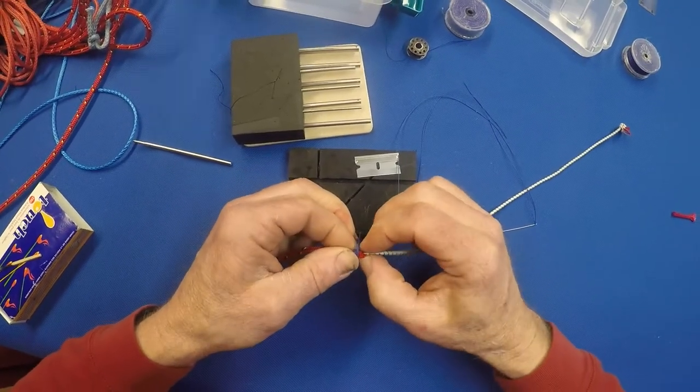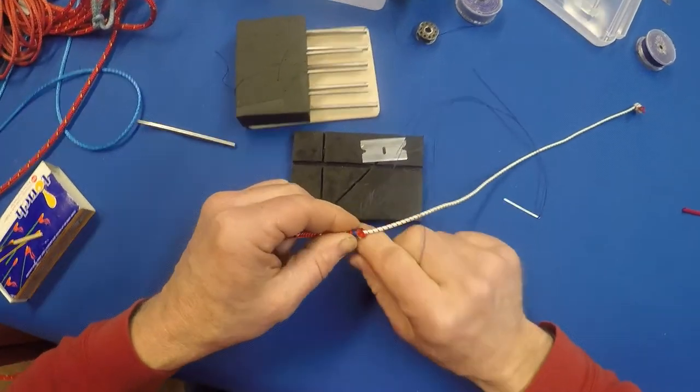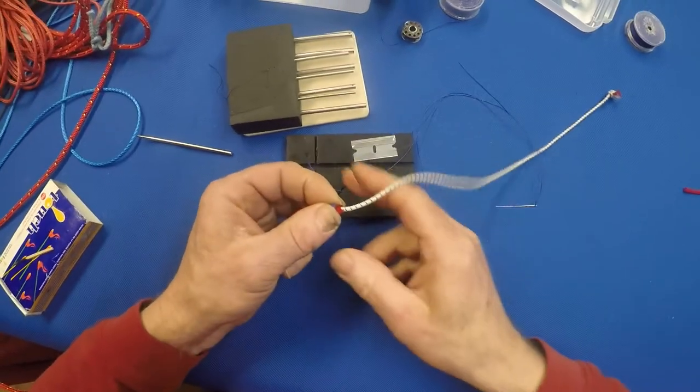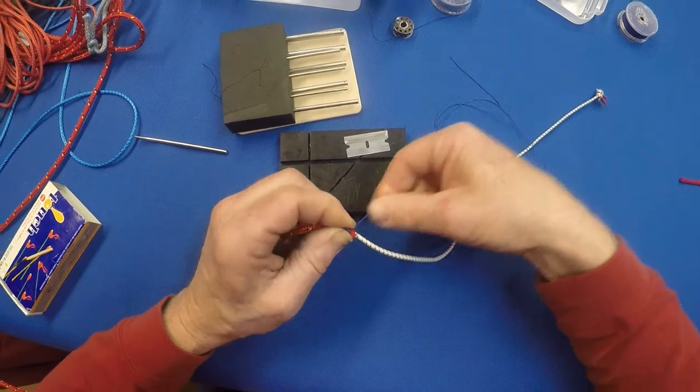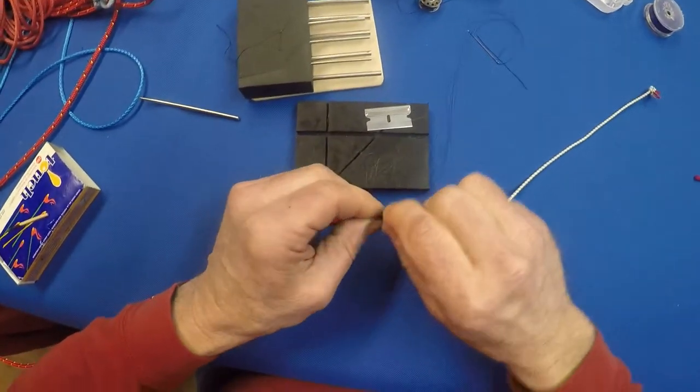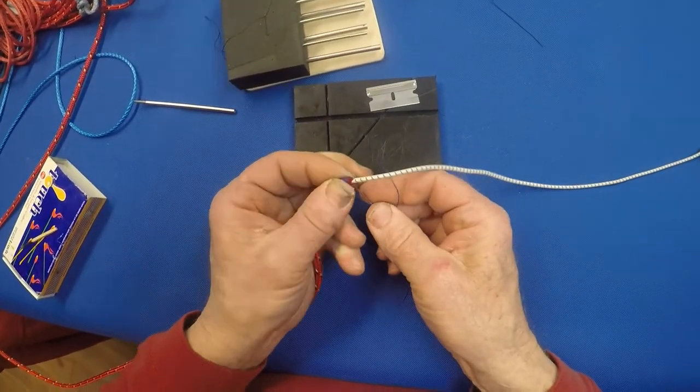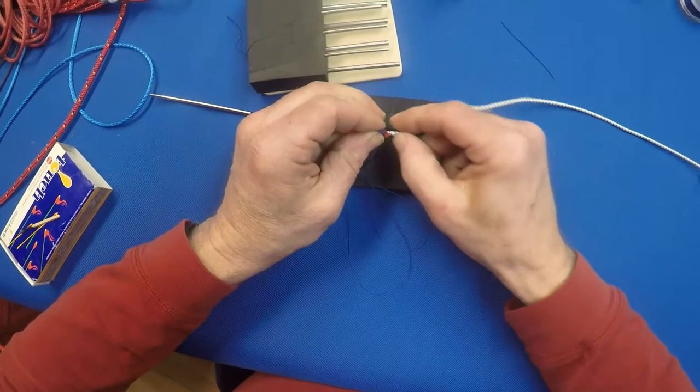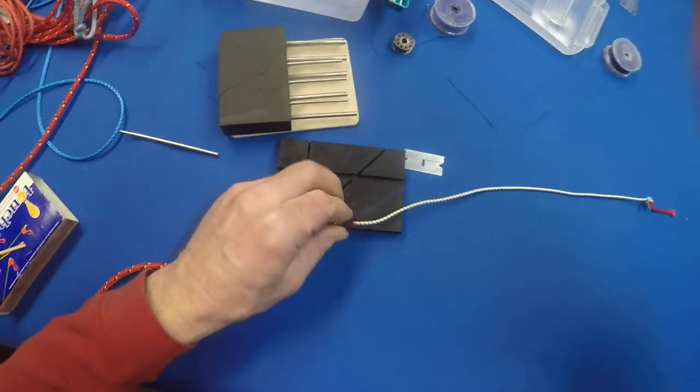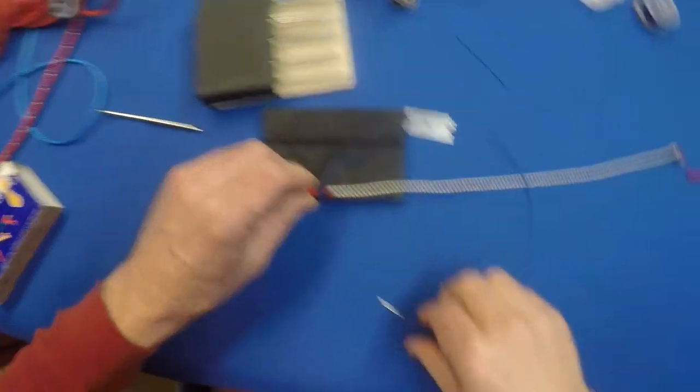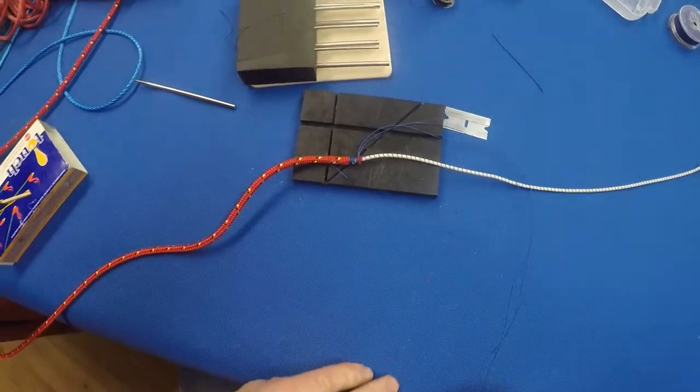There we go. That'll keep that end from fuzzing out, and it's a nice smooth transition from the bungee to the five mil.